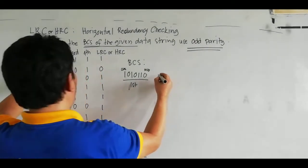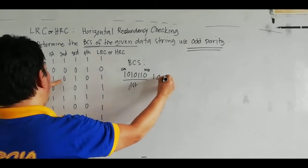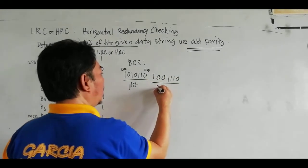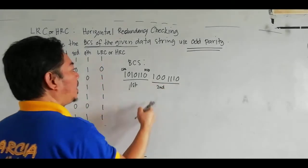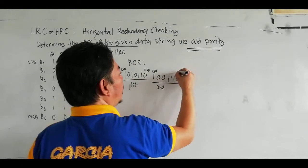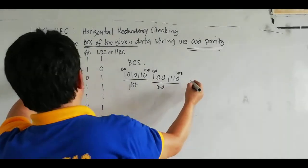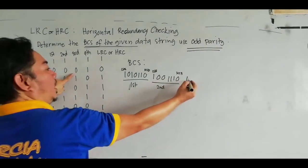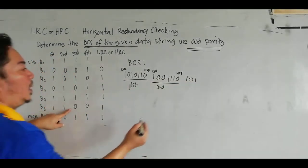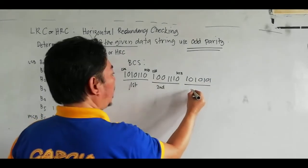The second data string is: 1, 0, 0, 1, 1, 1, 0. So 1 is your LSB and 0 is your MSB. For the third data string: 1, 0, 1, 0, 1, 0, 1. This is your LSB and this is your most significant bit.